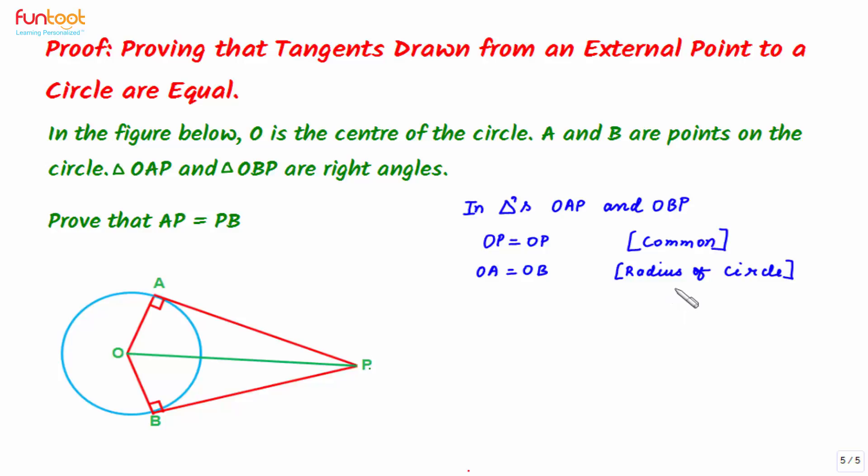This is the radius of the circle, and angle OAP is equal to angle OBP, each equal to 90 degrees. This is given to us.